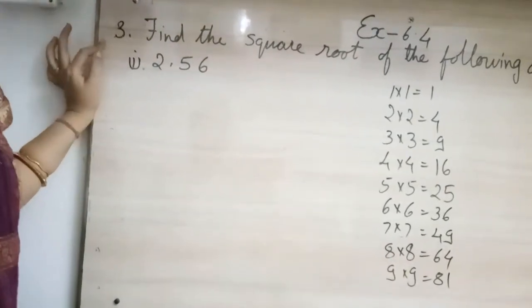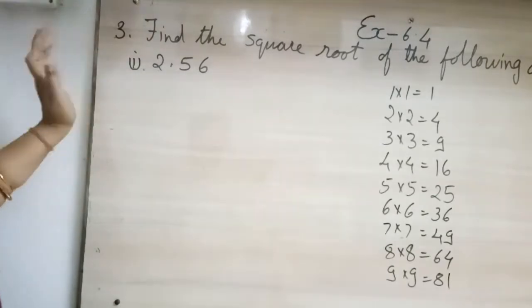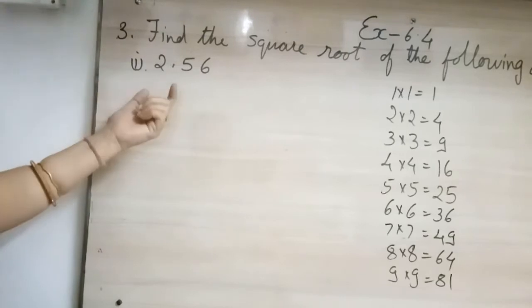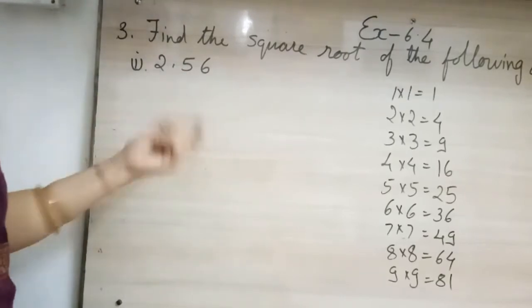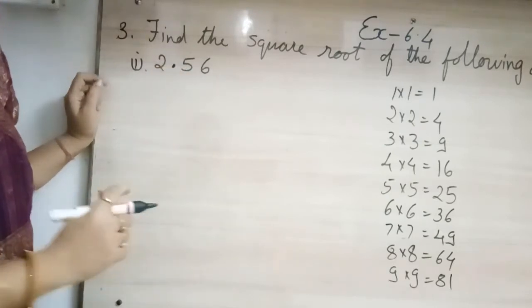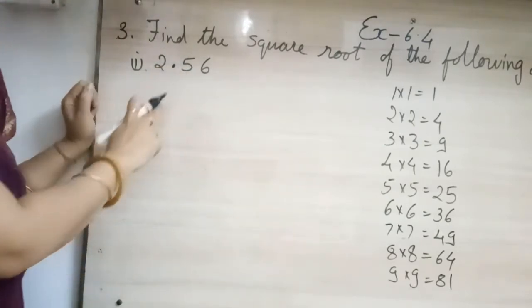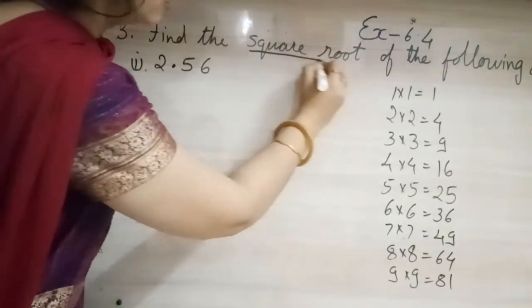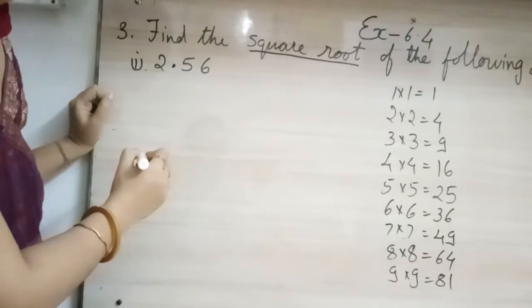Okay students, now in question number three, we are going to study a little new method. We can say it is long division method, but in this, the number which we are getting is having decimal point. In this video, we will learn square root by long division method, but our numbers are in decimal.